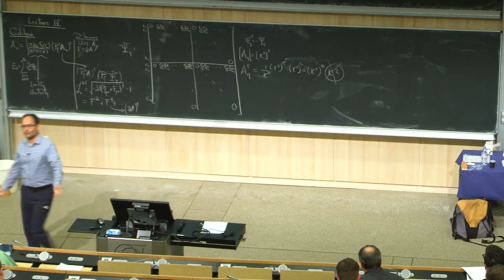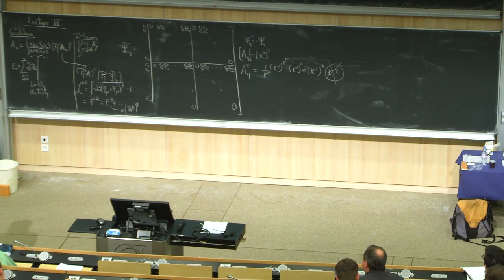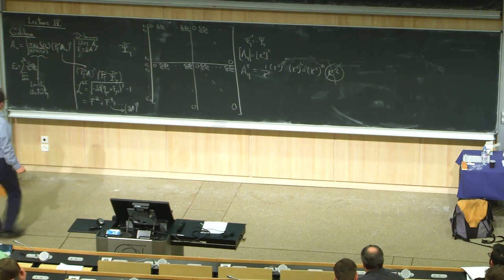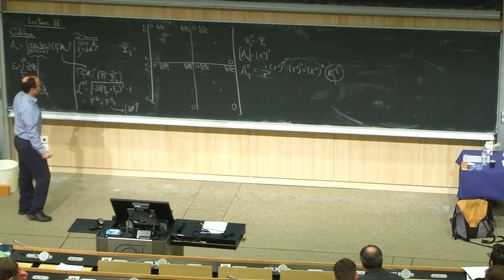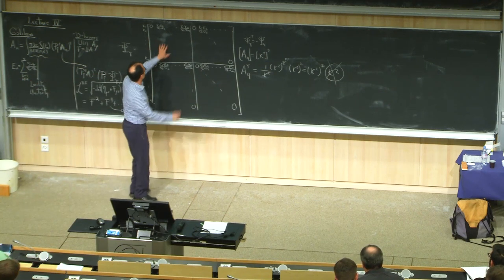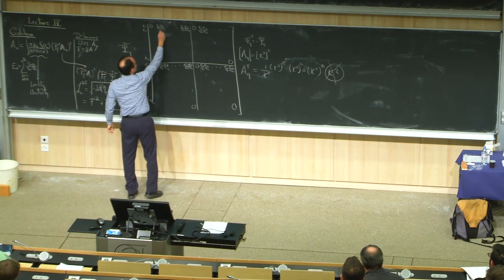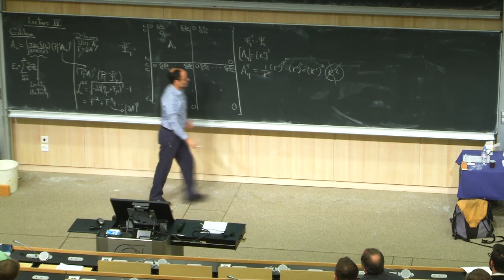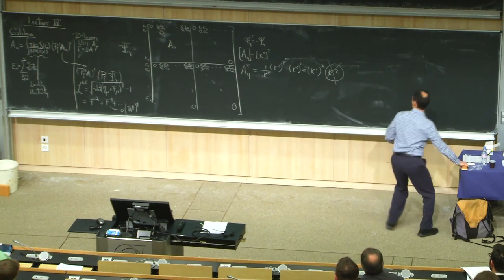We want to get rid of that extra power. How can we do it? This matrix doesn't have any null eigenvectors. How can that be, since it contains the A matrix? Why doesn't it have null eigenvectors? Let's check.